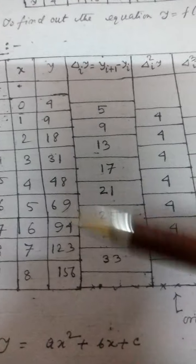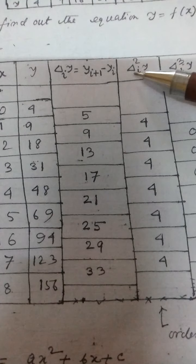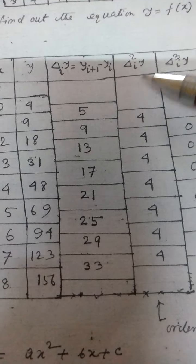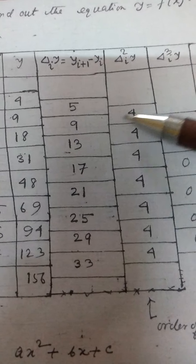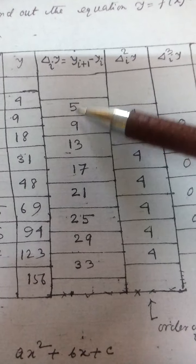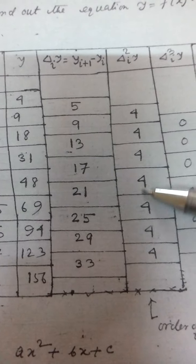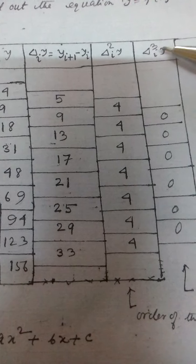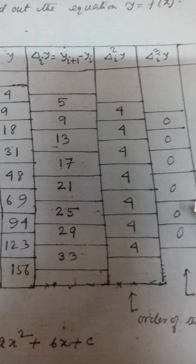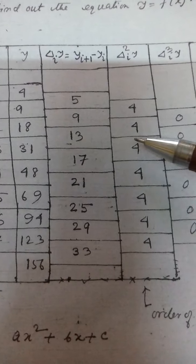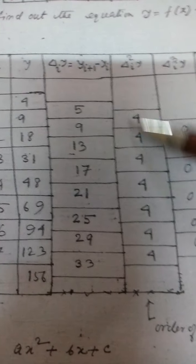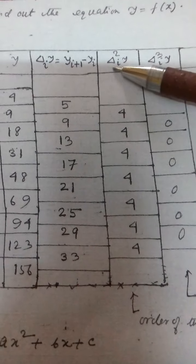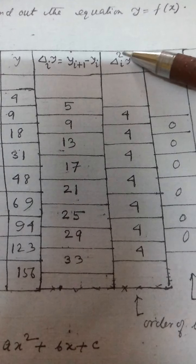156 minus 123 is 33. Now for the second difference, delta²(y): each value is 4, and 4 is constant throughout. If we take the third difference, delta³(y), it is all zeros. So before reaching zero, the order of the equation is determined to be 2.